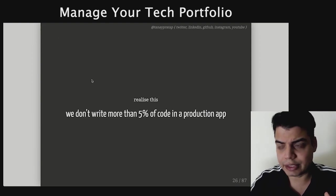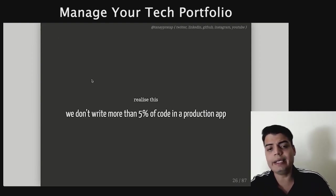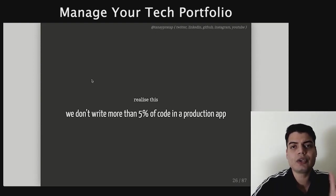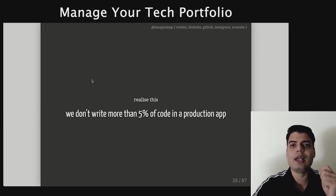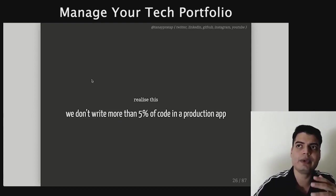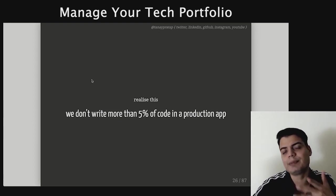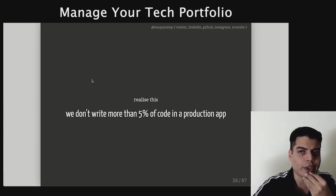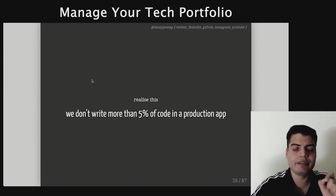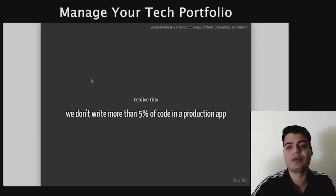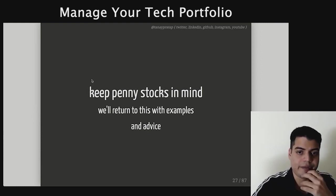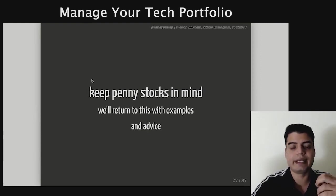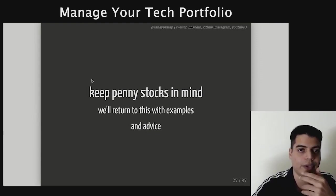Understand this: when you are in industry or even as a student writing apps, you don't write more than 5% of your code. The next 95% is all libraries, framework, all of that code. So until you get the library and the developer ecosystem around it, it's very hard to get something into production. You only write 5% to 10% max of code in a production app. Keep penny stocks in mind — we'll return to this with advice on how you should invest in and know about penny stock.